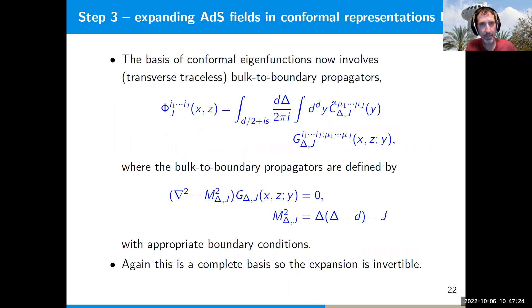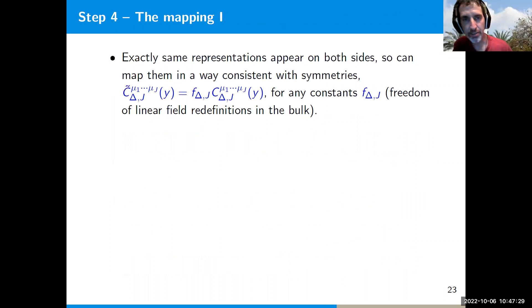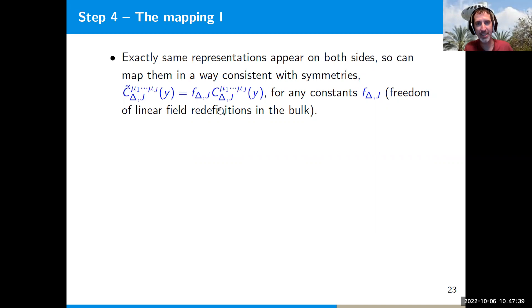Now we've expanded both sides in irreducible representations of the conformal group: on the field theory side with coefficient c(Δ,j,y) and on the gravity side with coefficient c̃(Δ,j,y). We can now map between them in an obvious way by simply identifying the coefficients on the two sides, giving a mapping that is manifestly consistent with the conformal symmetry.